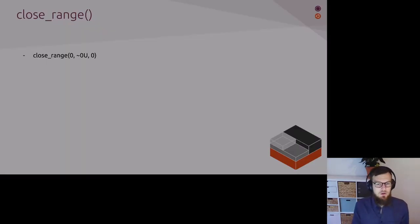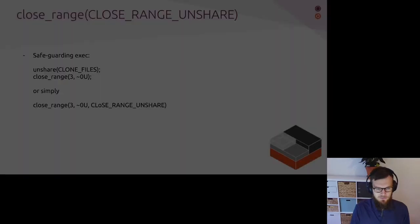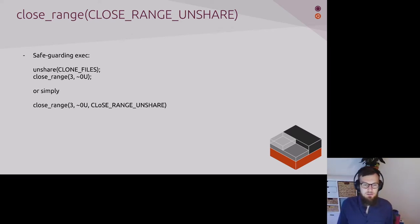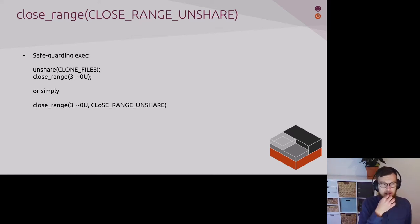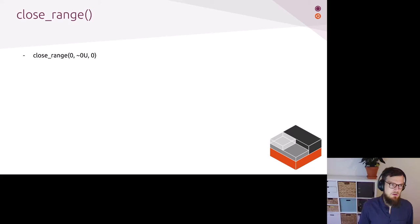The first thing I want to talk about is the close_range syscall. It was added in kernel 5.9 and simply allows efficiently closing a range of file descriptors up to all file descriptors of a calling task. In this example, we would essentially close all file descriptors starting from zero up to the last file descriptor that could possibly be open.